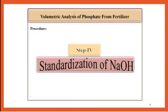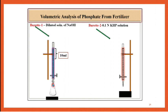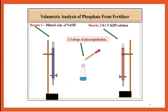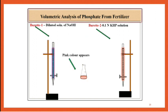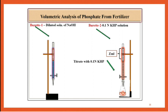The fourth step is standardization of NaOH. Fill burette number 1 with diluted NaOH solution and burette number 2 with 0.1 normal KHP solution. Take 10 ml of diluted NaOH in a clean and dry conical flask, add 2 to 3 drops of phenolphthalein indicator. Pink color will appear. Titrate with 0.1 normal KHP with constant stirring until the solution becomes colorless. This is the end point. Record this reading as Z ml.